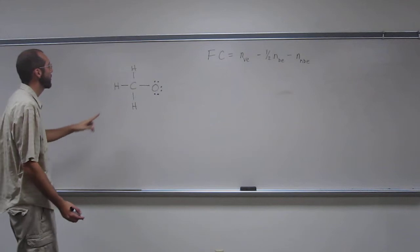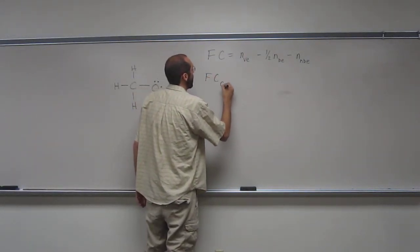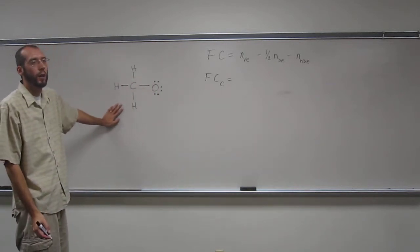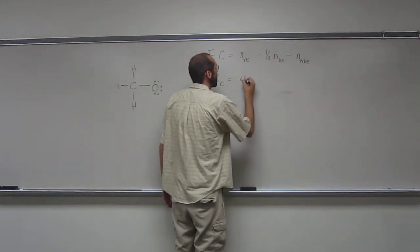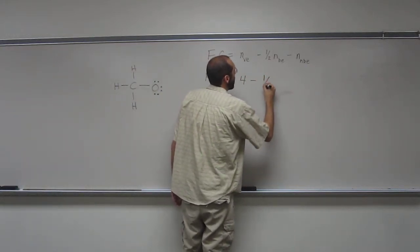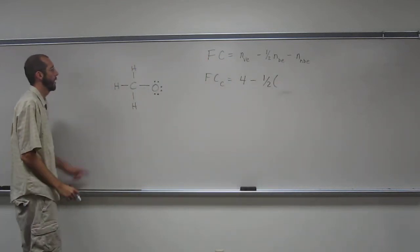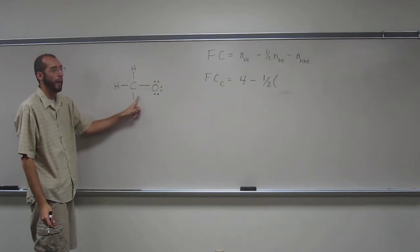So let's try to do the formal charge for carbon and for oxygen. The number of valence electrons for carbon is 4, get that from the periodic table, minus one-half the number of bonding electrons. So how many bonding electrons do we have? So 2, 4, 6, 8.